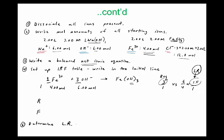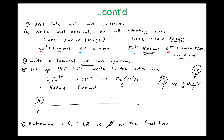In an IRF table, the limiting reactant goes to zero on the final line. You always subtract on the reacted line for reactants — reactants decrease over time — and add for products. Since all of the OH⁻ reacts, the reacted line shows minus 6.00 moles of OH⁻, leaving 0.00 moles on the final line.